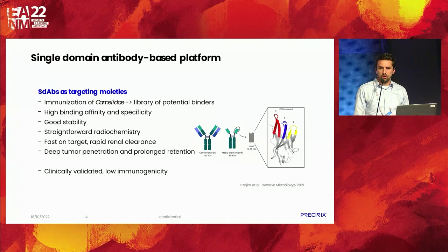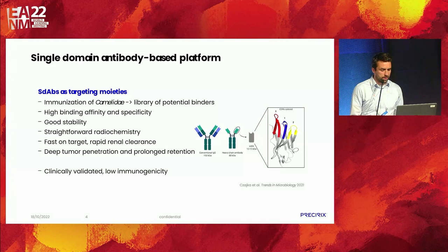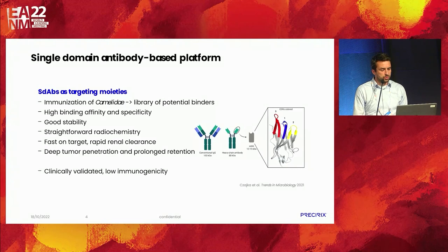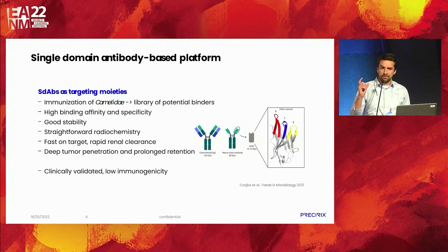A bit of background on the platform: single domain antibodies are the smallest naturally occurring antibody fragment. In animals of the camelidae species — camels, llamas, etc. — next to conventional antibodies, you have a very particular type called a heavy chain only antibody. They lack the light chain but are fully functional for antigen binding, and the variable domain, also referred to as a VHH, is in fact a single domain antibody.